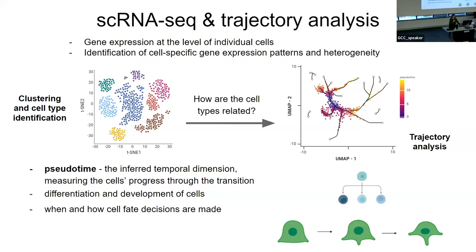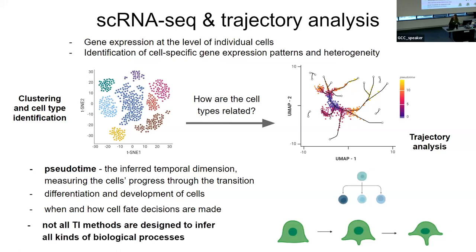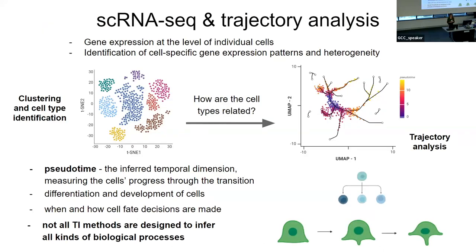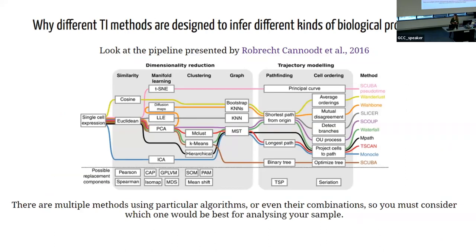Trajectory analysis is very useful for studying differentiation and development of cells as well as different cell fate decisions. However, it's important to know that not all trajectory inference methods can be used to infer all kinds of biological processes. There are lots of trajectory inference methods that use various algorithms to calculate pseudo time. Having these various methods, we need to compare the results so that we can make sure our results are accurate and make biological sense.